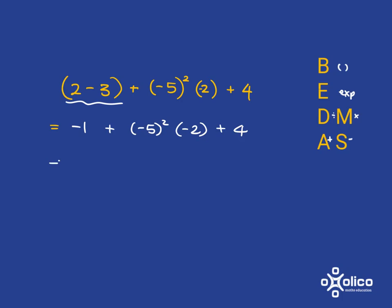Now the next step that I need to do is to look and see if there are any exponents to deal with, and I do have exponents here. What's negative 5 squared? Well, it's negative 5 multiplied by negative 5. A negative times a negative is a positive, and 5 times 5 is 25. So this is 25.